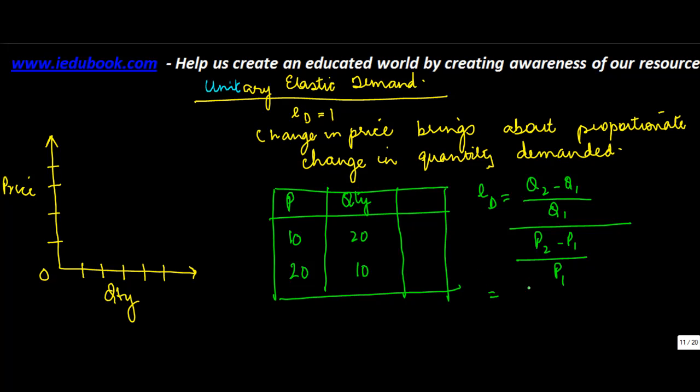So the quantity second was 10 minus 20 divided by 20, or 10 by 20 equals 1 by 2. And in price it was 20 minus 10 divided by 10.